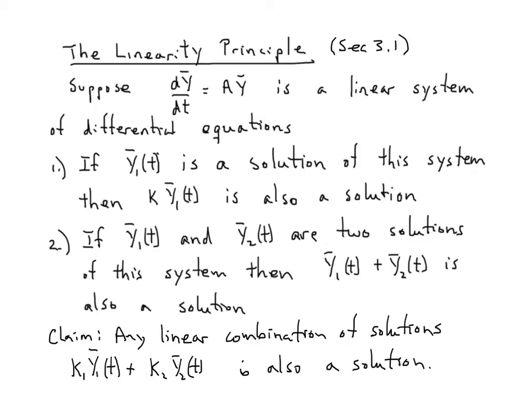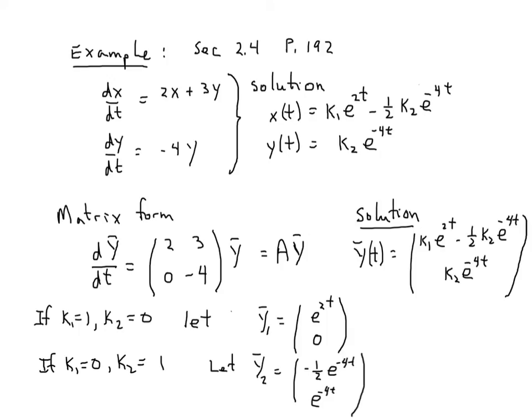Let's look at an example. In section 2.4 on page 192, this should be a familiar looking system. It's a partially decoupled system that can be written in matrix form.